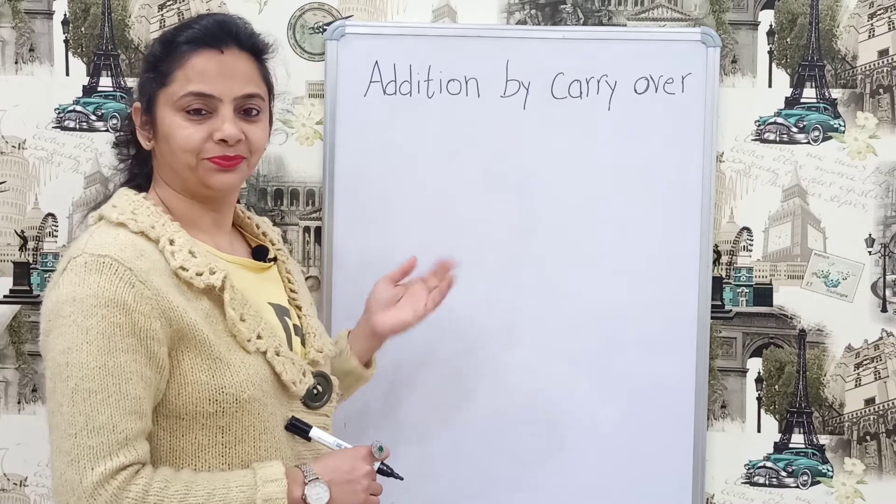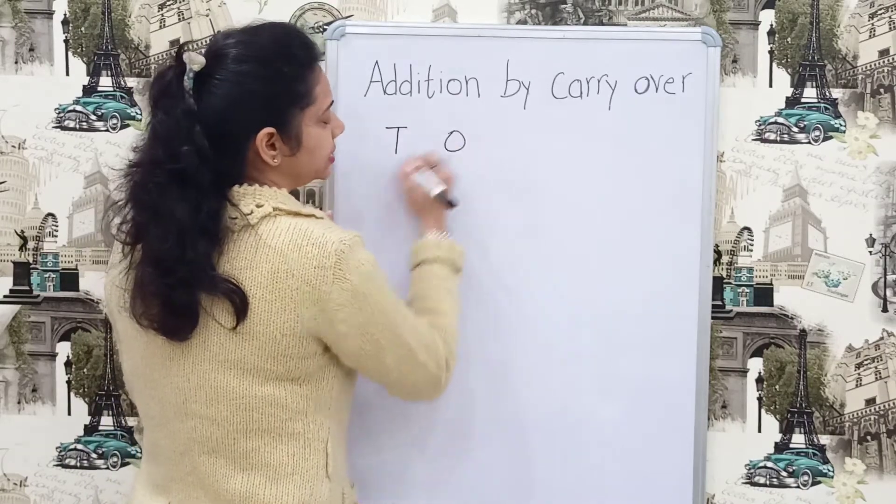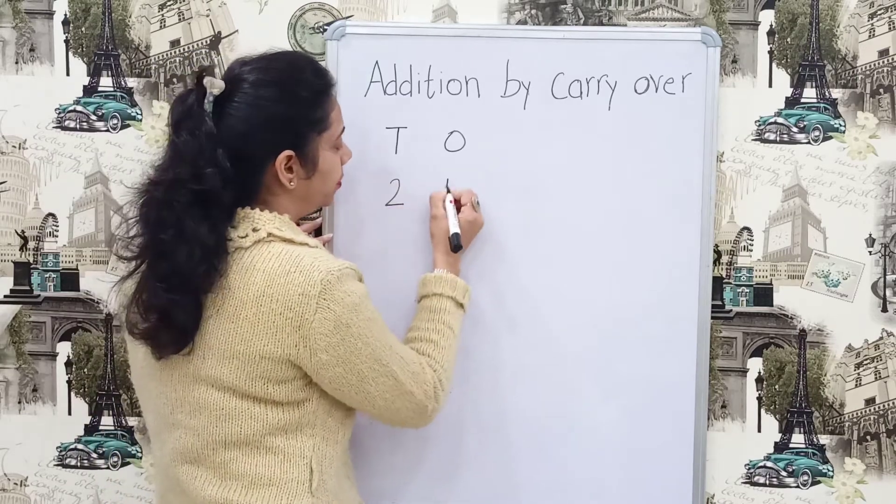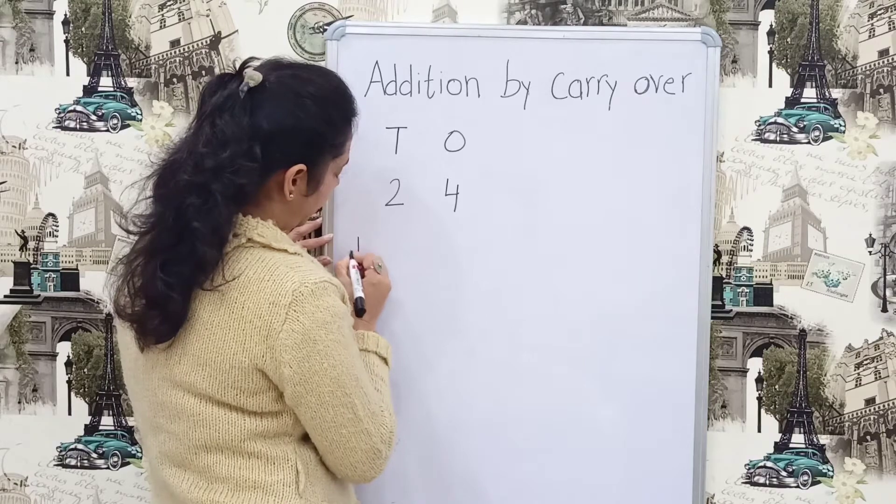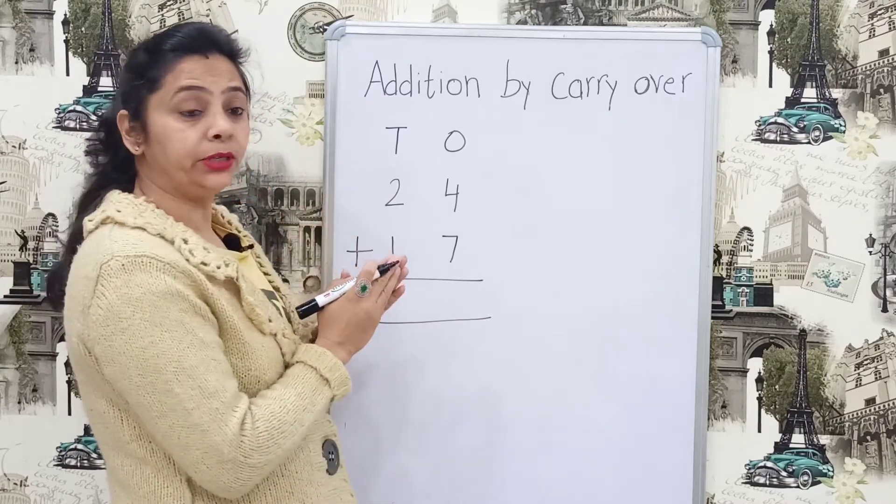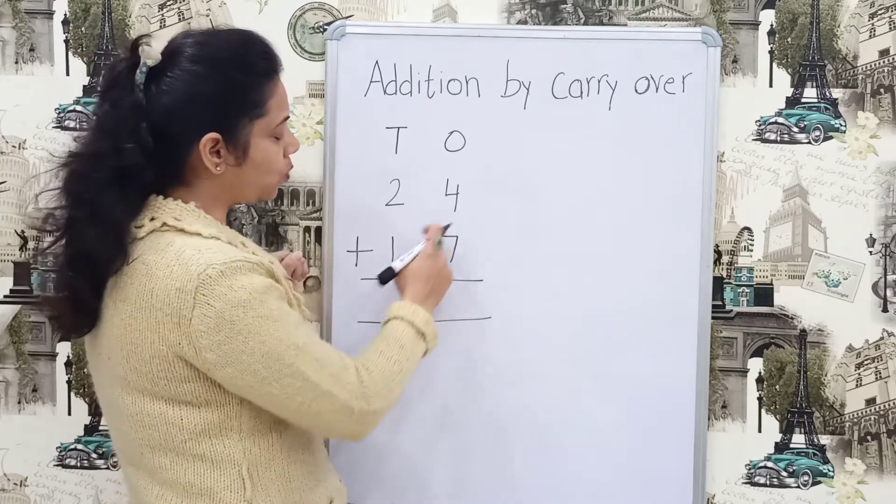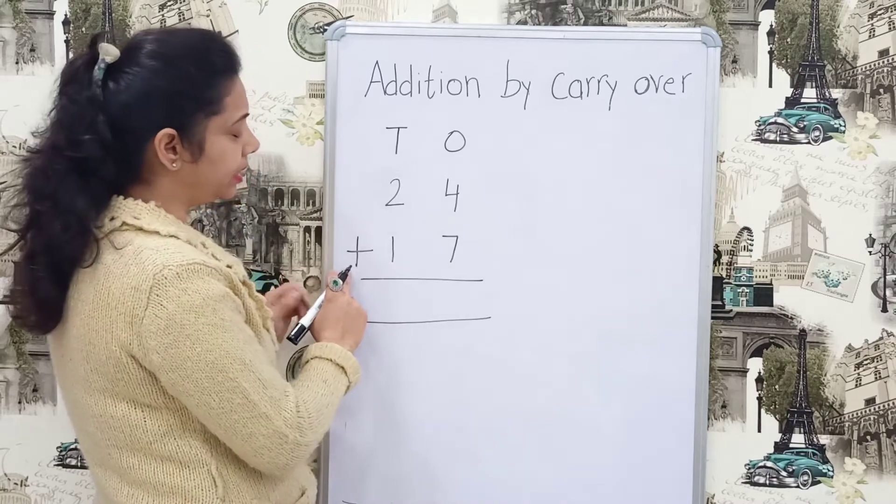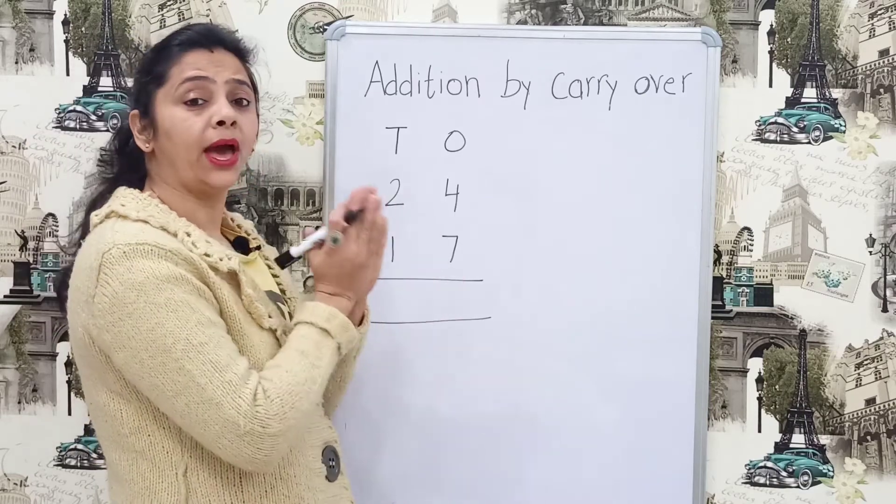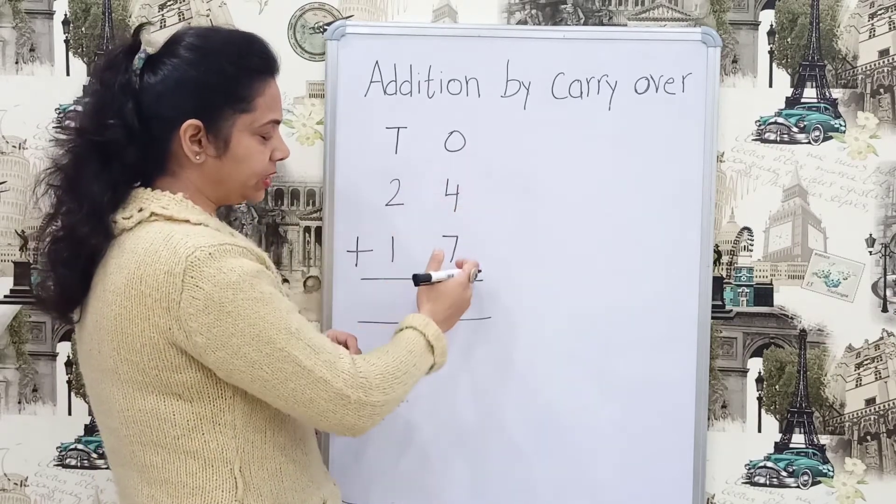We will write 5 in 1's place and 1 on 10's place. Now 3 plus 1, keep 3 in mind and 1 finger. 3 plus 1, 4. 45 will be the answer. Clear? I hope now you all are able to understand how we can add 2 digit number and 1 digit number by carryover method. Now I will tell you how can we do the sum of 2 digit numbers by carryover method.